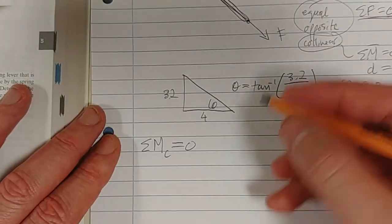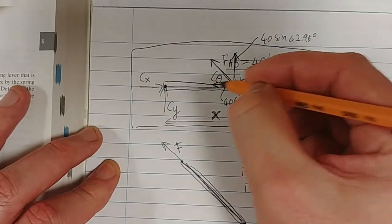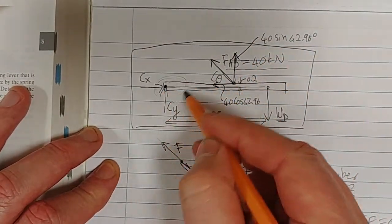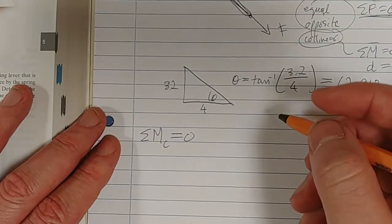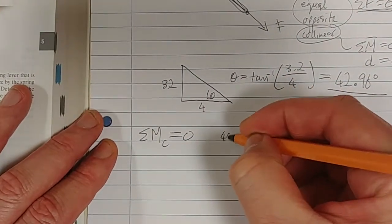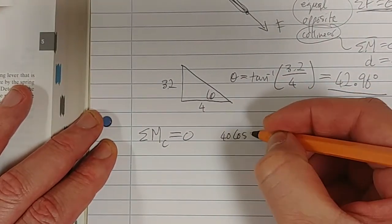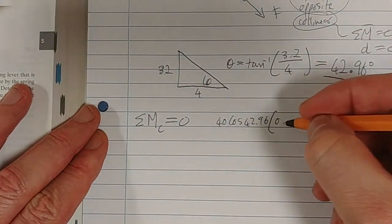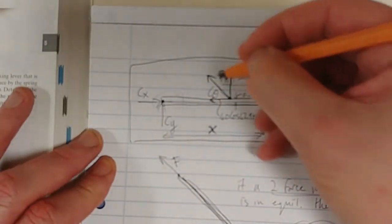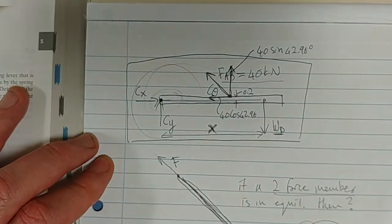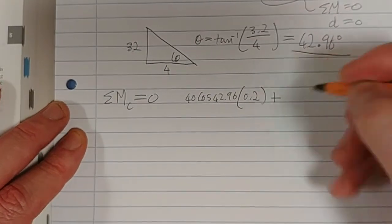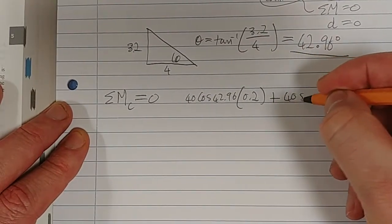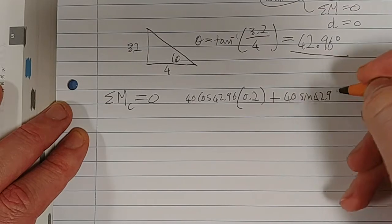So let's look at that. This horizontal component will cause an anticlockwise moment. So that will be plus, so we say 40 cos 42.96. And what is the moment arm? It is 0.2.